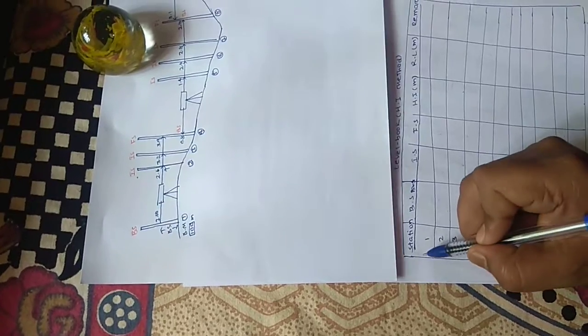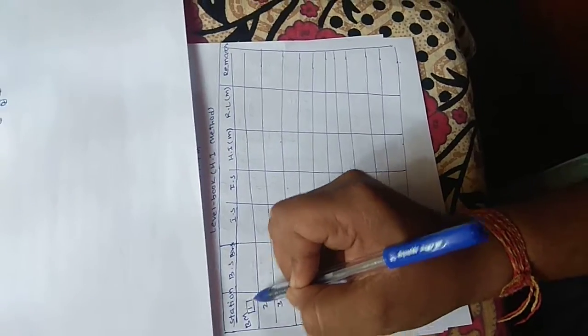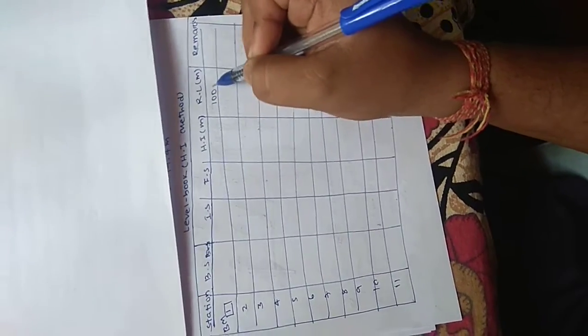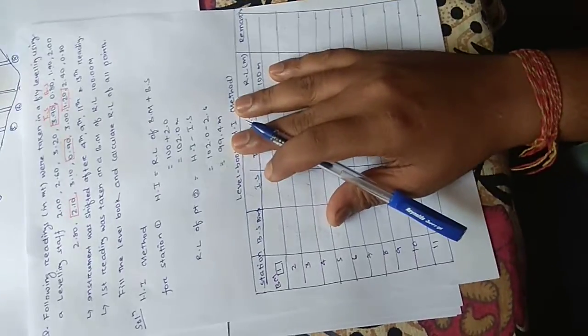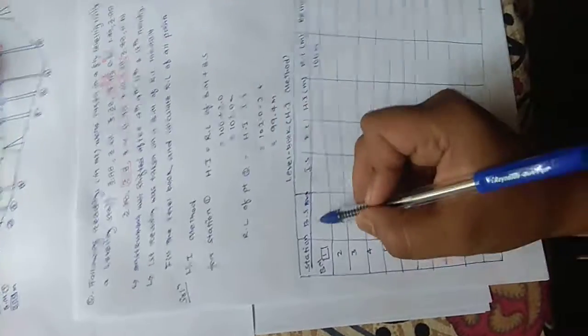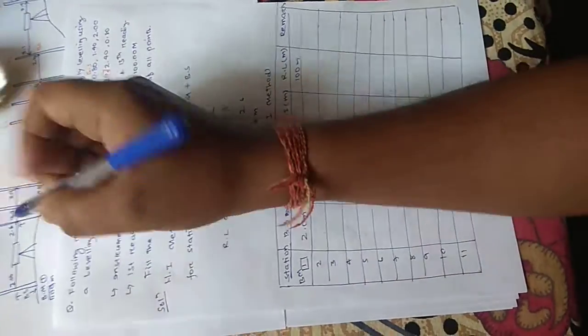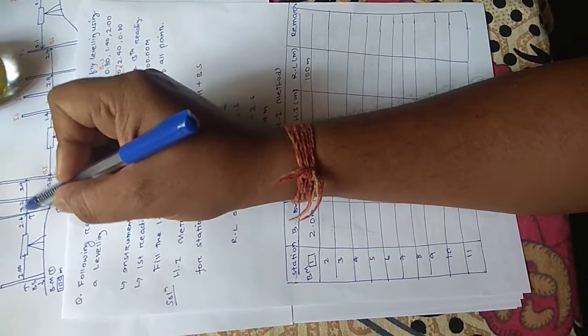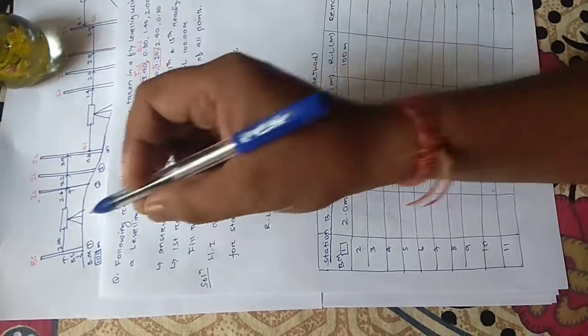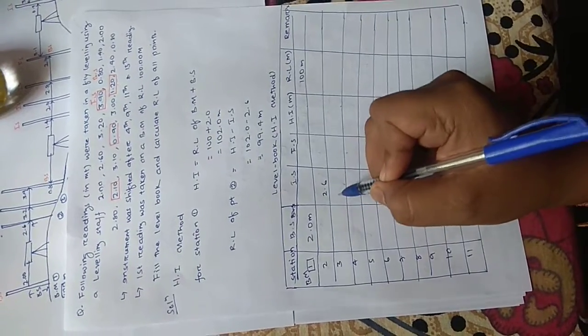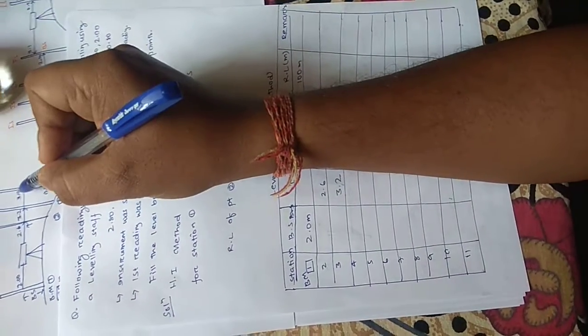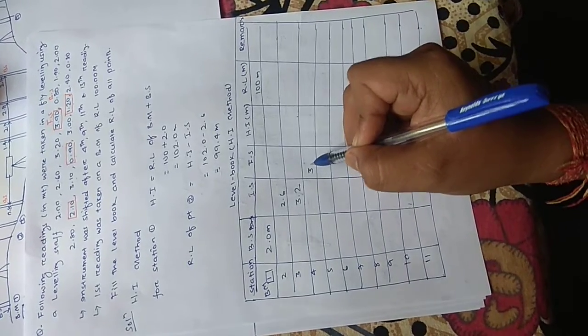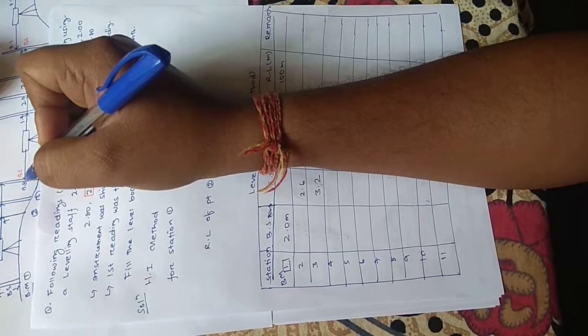The first station is the benchmark with a reduced level of 100 meters. The backsight value is 2.0 meters. The intermediate sights for stations 2 and 3 are 2.6 and 3.2 respectively. The foresight is 3.9, and immediately at the same station 4, the backsight for the next setup is 0.88. I am filling in all these values in the table.